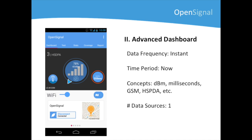Moving to the advanced dashboard, the second layer, here we see an increase in precision. While the frequency, time period, and data source count stays the same, the concepts present a change from good/bad signal to dBm and percent of signal strength, while data speeds move from good/bad data to milliseconds of latency.